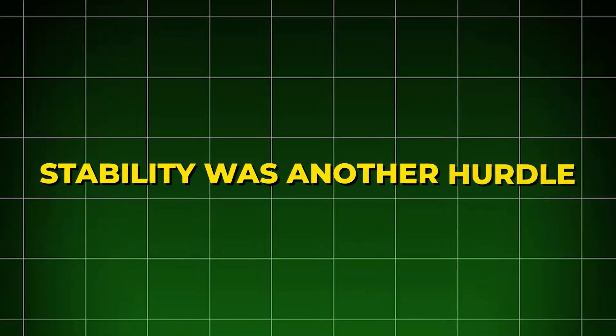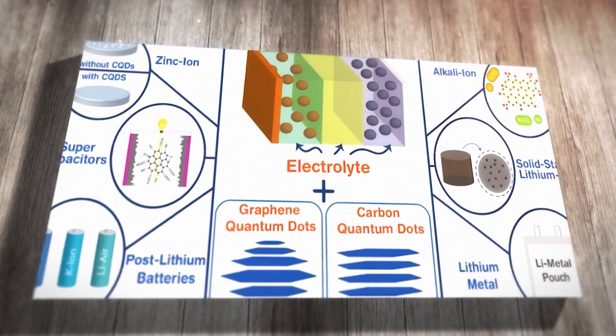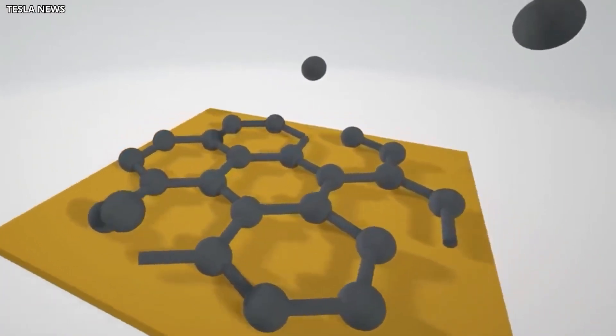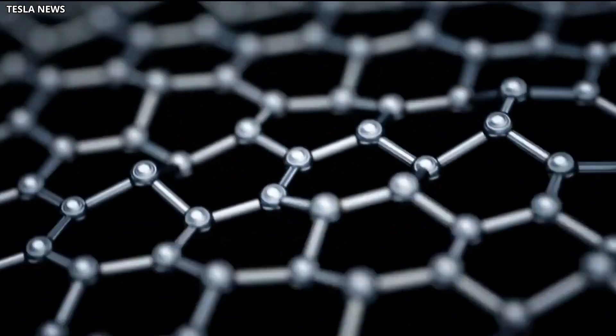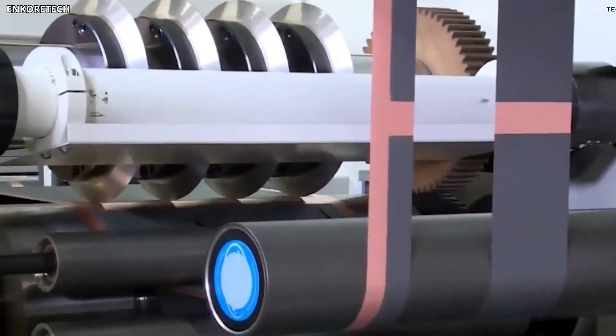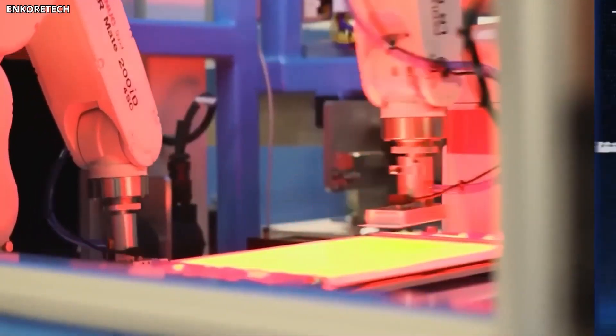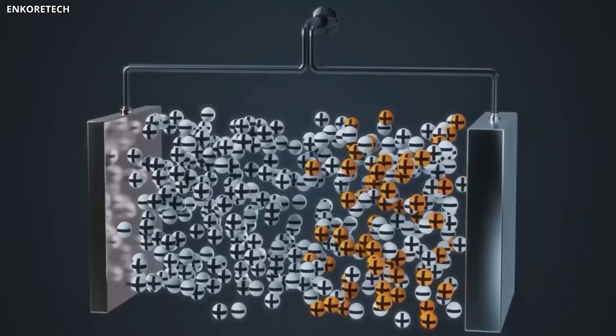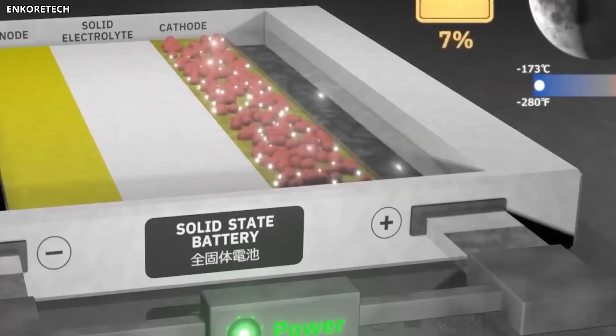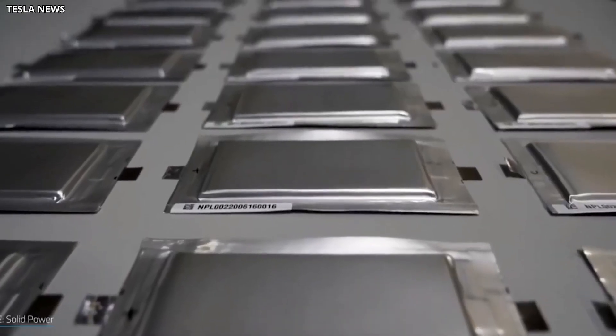Stability was another hurdle. Graphene can react with electrolytes in batteries, forming unwanted compounds that degrade performance. Researchers had to develop coatings and treatments to prevent this without losing the material's advantages. And even when those problems were solved in the lab, scaling up to industrial production introduced new ones. Manufacturing processes that work for small batches don't always translate to high-speed, high-volume lines. Quality control becomes harder. Costs stay high until production reaches a certain threshold.